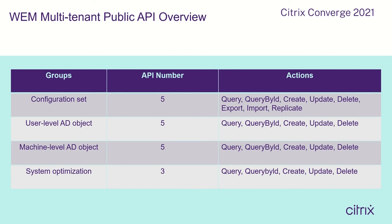For system optimization, we support two APIs. Query uses GET method. Query by ID uses GET method based on ID only — the ID of the resource you want to query. Update uses PUT method; the site will be updated based on transaction ID and customer ID.